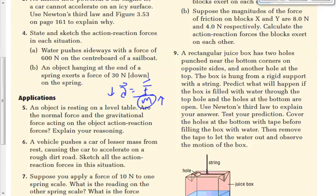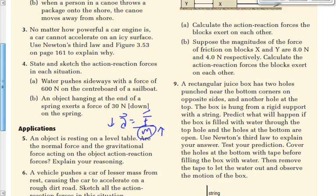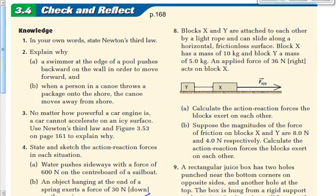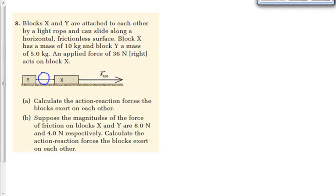The other question we have to do is number 8, which I expected us to go over. This is much like the questions we did in class yesterday — finding the tension, the action-reaction force, the tension between two objects. It says: block X and Y are attached by a light rope and can slide along a horizontal frictionless surface. Block X has a mass of 10 kilograms, block Y has a mass of 5 kilograms. An applied force of 36 newtons to the right acts on block X. We want to know the action-reaction forces the blocks exert on each other — in other words, find the tension in the rope that joins the two.